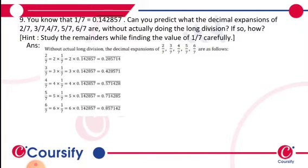You know that 1/7 is equal to 0.142857 bar. Can you predict what the decimal expansion of 2/7, 3/7, 4/7, 5/7, 6/7 are without actually doing the long division? If so, how?